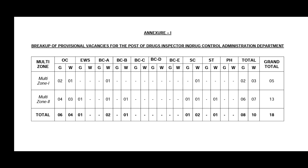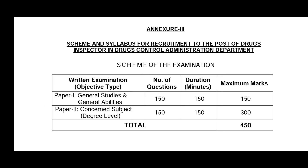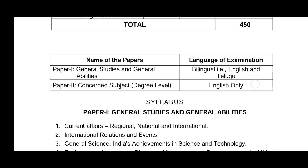The exam pattern consists of two papers. Paper 1 is General Studies and General Abilities — 150 questions, 150 minutes duration, and 150 marks. Paper 2 is at degree level — 150 questions, 150 minutes duration, and 300 marks, with 2 marks per question. The total marks are 450.